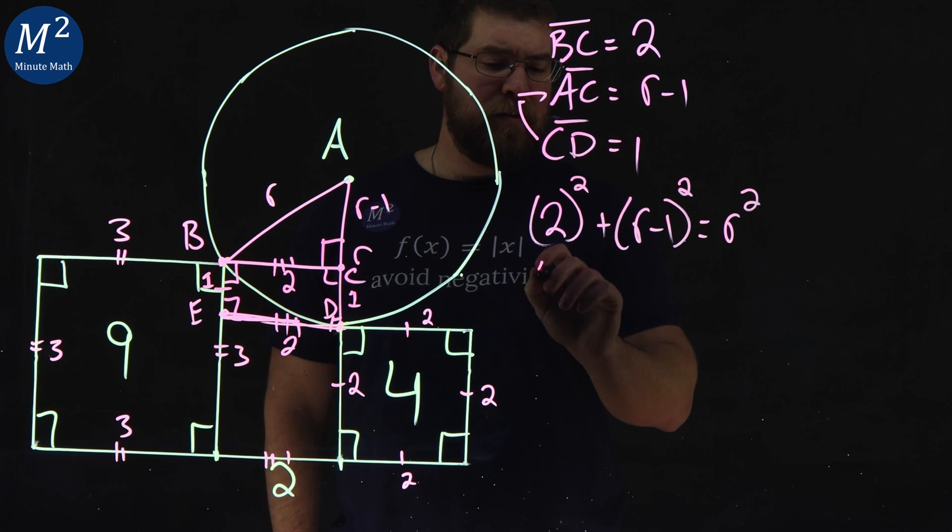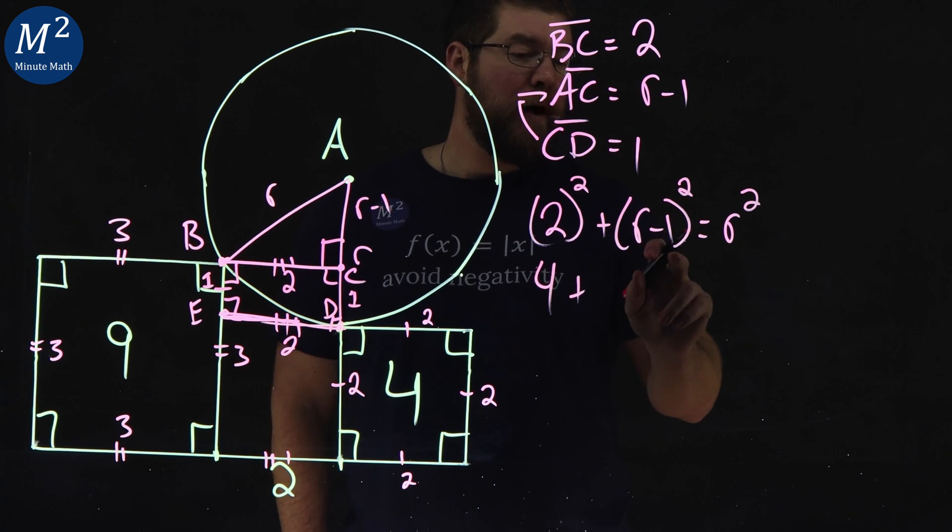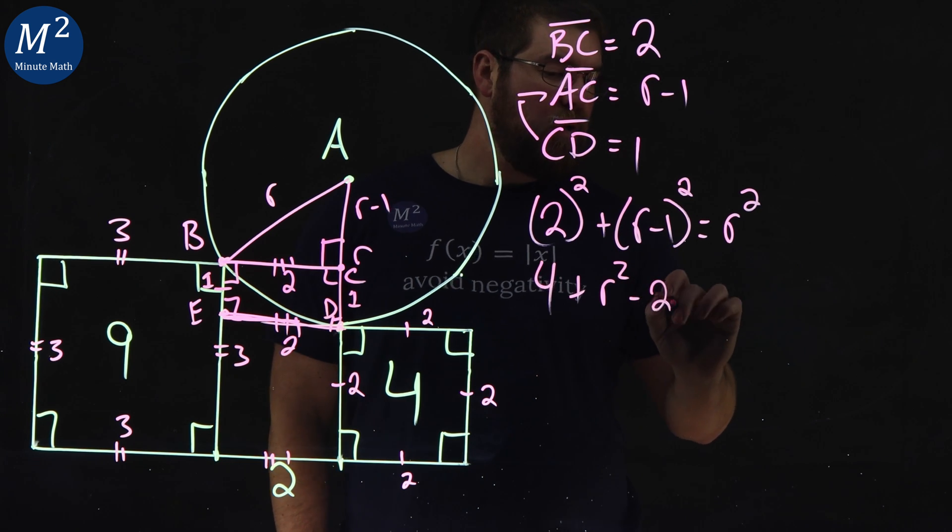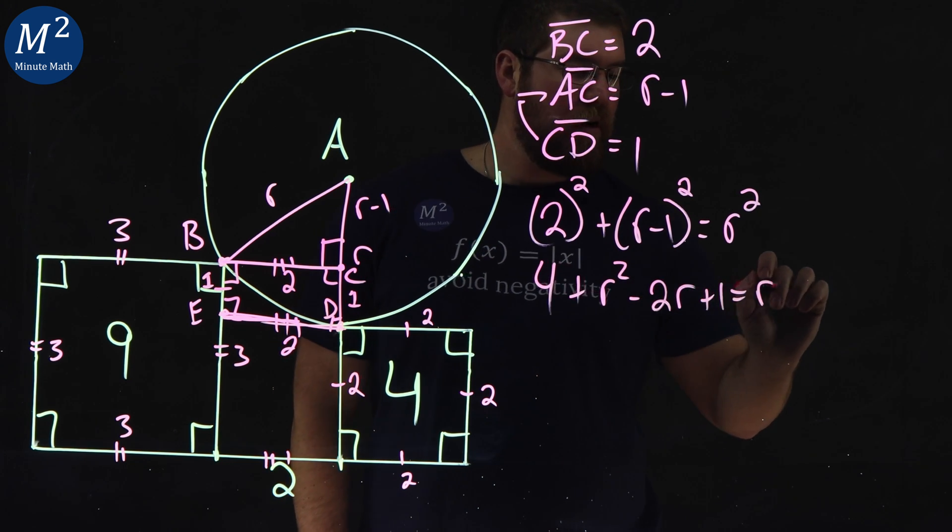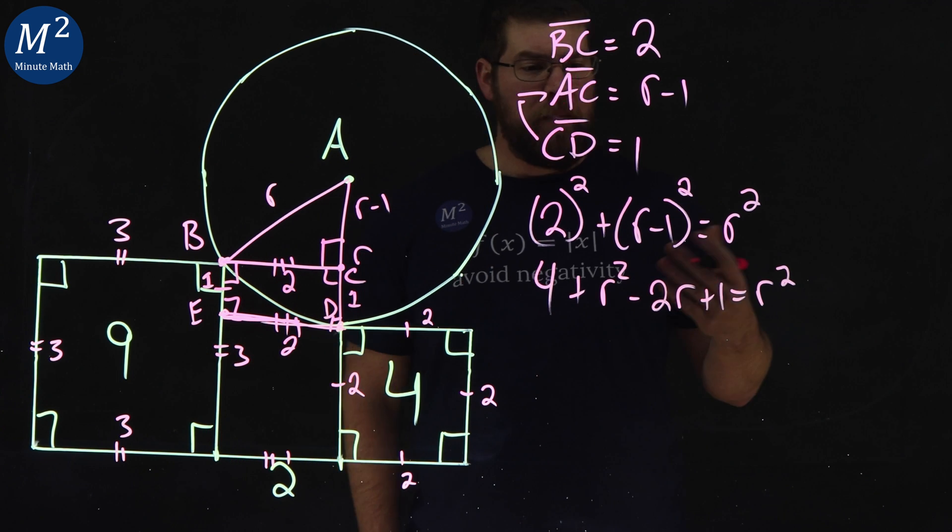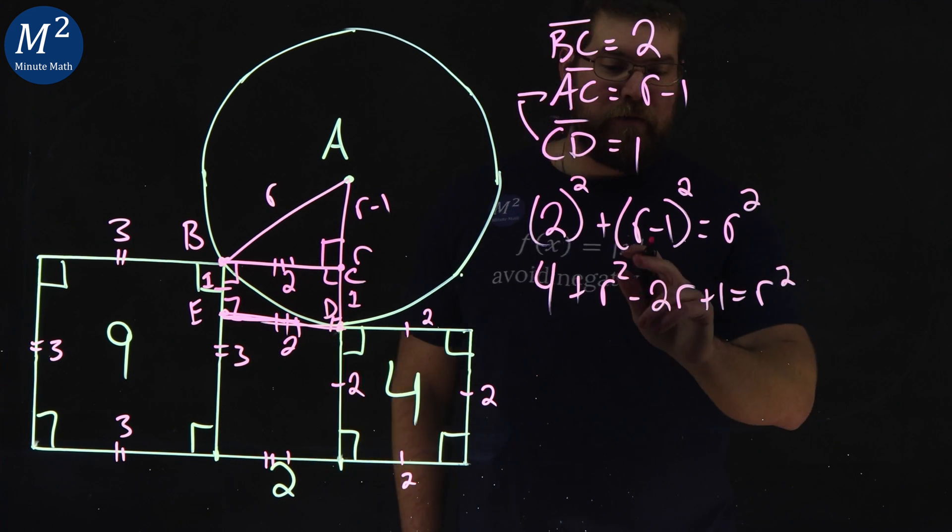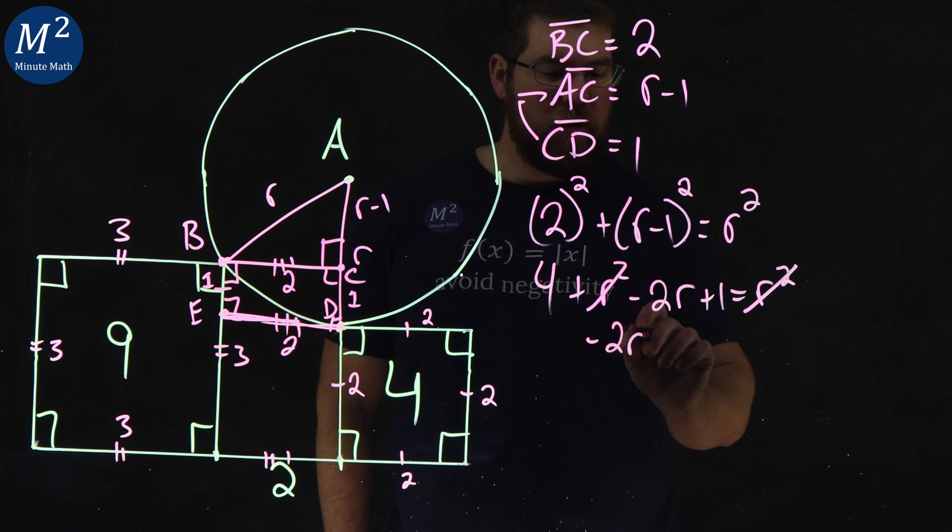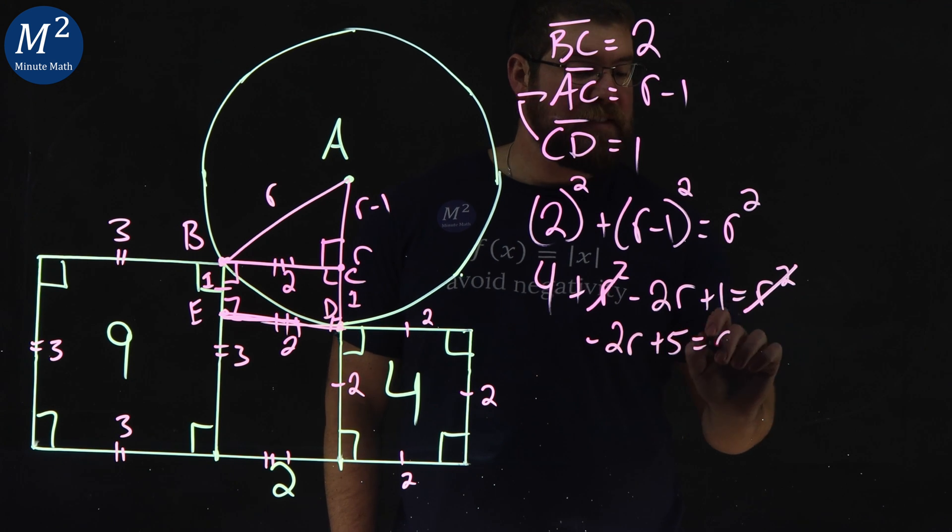Simplify this. Two squared is four. R minus one all squared is R squared minus 2R plus one equals R squared. From there, we want to simplify and get R by itself. The R squareds cancel on either side, and we have four and one is five. So we have minus 2R plus five equals zero.